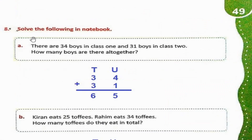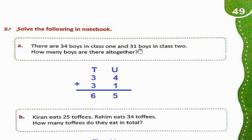Page 49, Question number 8: Solve the following in your notebook. Part A: There are 34 boys in class 1 and 31 boys in class 2. How many boys are there altogether? Class 1 mein 34 boys hain aur class 2 mein 31 boys. Hum 34 plus 31 karenge: 4 plus 1 is 5, 3 plus 3 is 6. Altogether there are 65 boys.